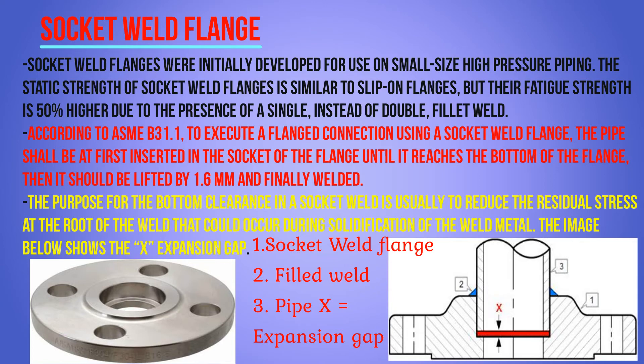Socket weld flanges were initially developed for use on smaller size, higher pressure piping. The static strength of socket weld flanges is similar to slip-on flanges, but their peak strength is 50 percent higher due to the presence of a single instead of double fillet weld. In the picture, number one is the socket weld flange, number two is the fillet weld, and number three is the pipe. As per ASME 31.1, to execute a flange connection using a socket weld flange, the pipe shall first be inserted into the socket until it reaches the bottom.